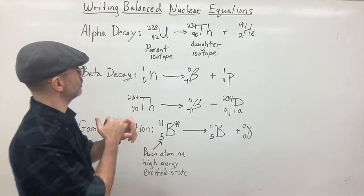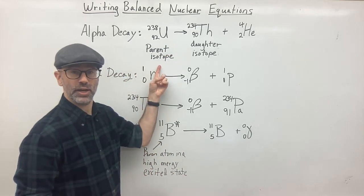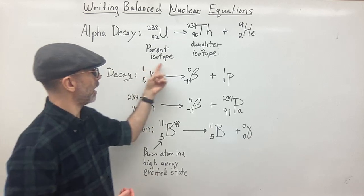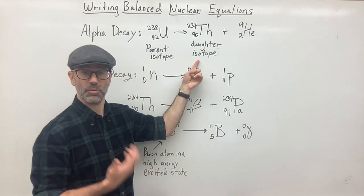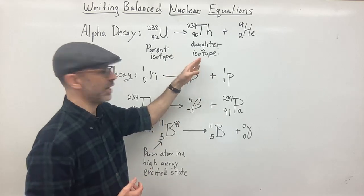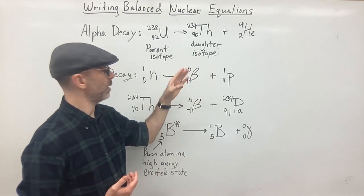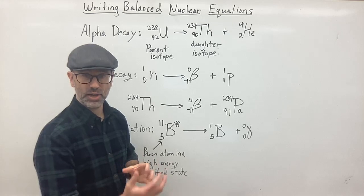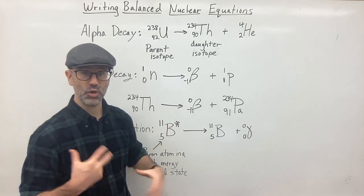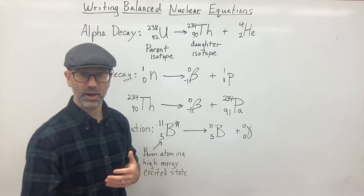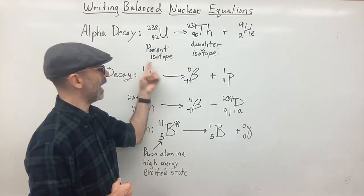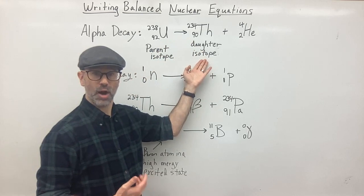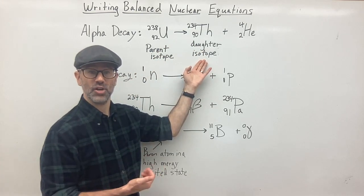In a nuclear equation you start off with some sort of parent isotope, and that gives rise to a daughter isotope which is one of your products. You can have more than one daughter isotope, but the daughter isotope comes from the parent. We use the terminology parent isotope and daughter isotope — just like in human relationships, the daughter comes from the parent.